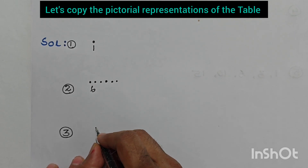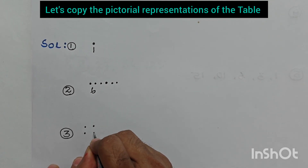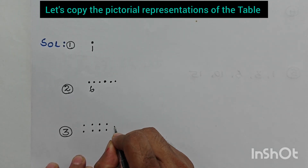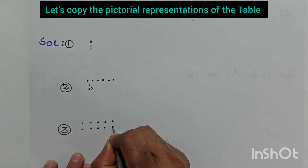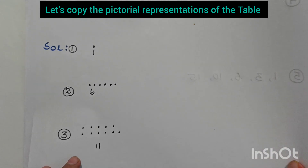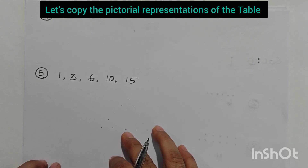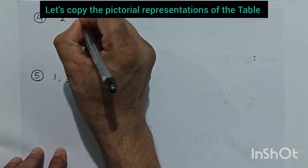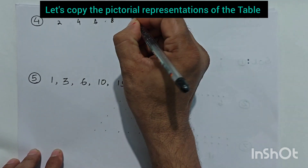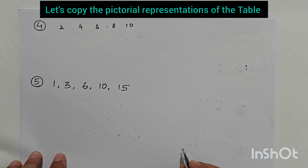We have to put eleven dots: one, two, three, four, five, six, seven, eight, nine, ten, eleven. We write eleven here. The next sequence is even numbers — two, four, six, eight, ten — up to ten is written, so we have to find the next number.